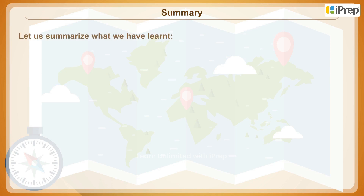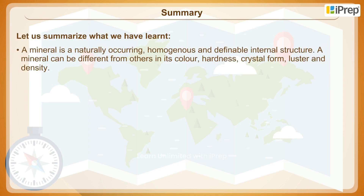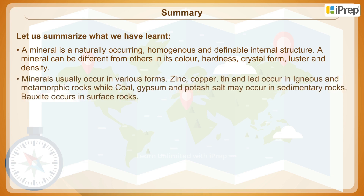Let us summarize what we have learned. A mineral is a naturally occurring, homogeneous substance with a definable internal structure. A mineral can be different from others in its color, hardness, crystal form, luster, and density. Minerals usually occur in various forms.